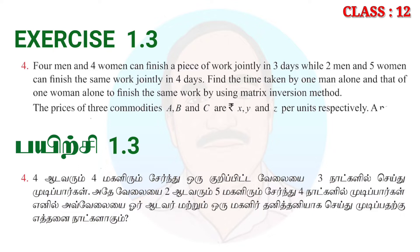Two men and five women can finish the same work jointly in four days, while two men and five women can finish the same work in four days. Find the time taken by one man alone and that of one woman alone to finish the same work, using the matrix inversion method.